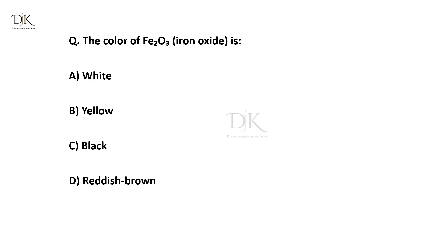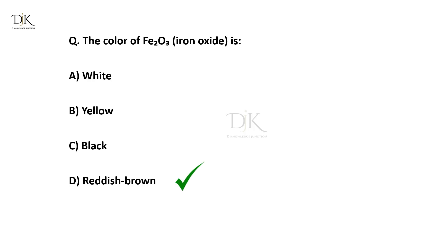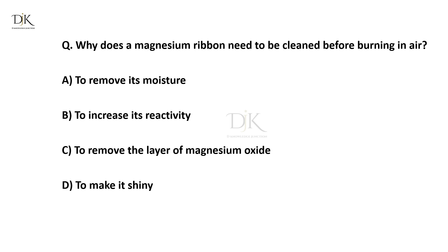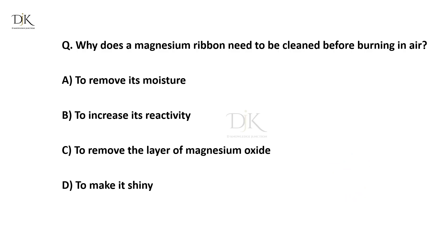What is the colour of iron oxide? The right answer is reddish brown. Why does the magnesium ribbon need to be cleaned before burning in air? The right answer is to remove the layer of magnesium oxide.